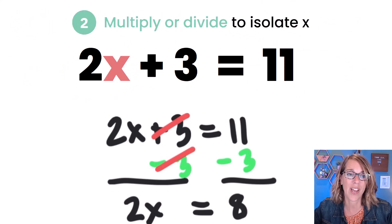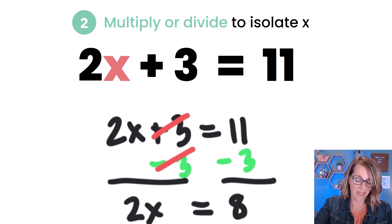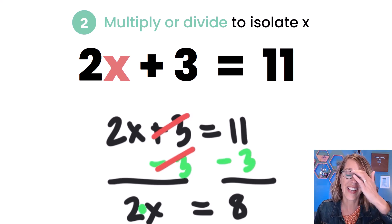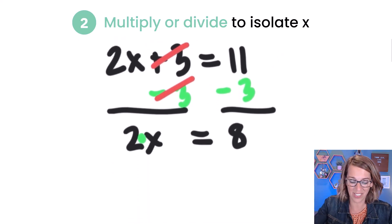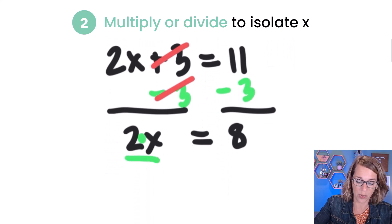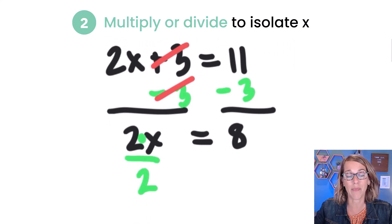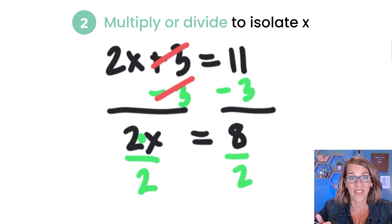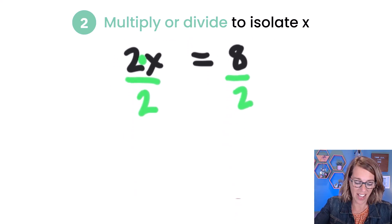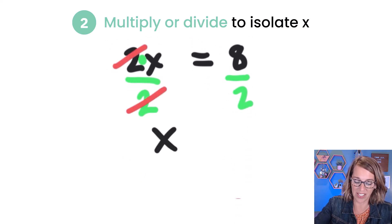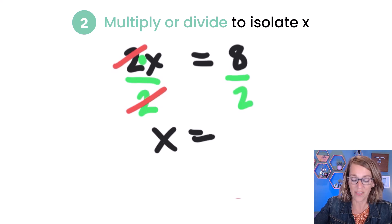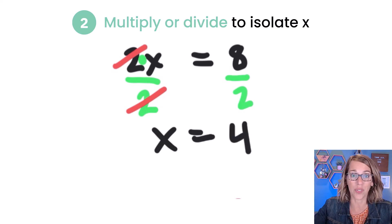Our second step is to multiply or divide to isolate that x. Right now I've got 2 multiplied times this x. To get it all by itself, I want to divide. So I'm going to divide with a fraction bar — 2x divided by 2. And I've got to do that on the other side too to keep this balanced, so I've got 8 divided by 2. On the left-hand side, I can go ahead and cancel those 2s, and I get just x. So x is equal to 8 divided by 2, which is equal to 4.